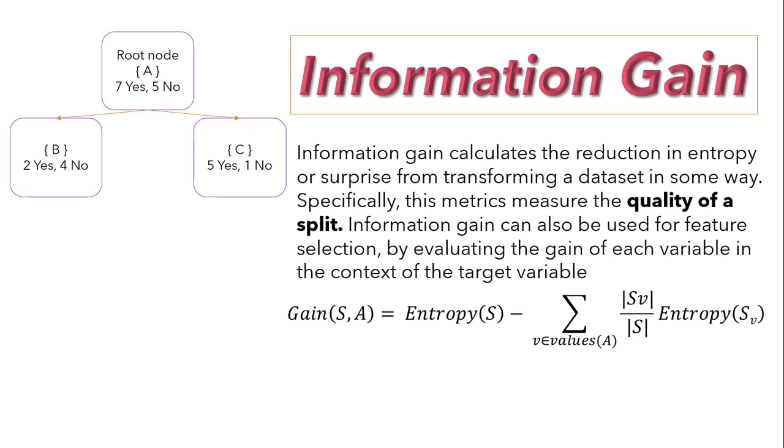I know this looks complicated, but we will understand this with one example. Again I will consider the same split we have used for understanding entropy. Here node A is splitting into node B and node C, where node A has 7 yes 5 no, node B has 2 yes 4 no, and node C has 5 yes 1 no. According to the formula, first we have to calculate entropy of S, which is nothing but the entropy of node A, that is root node. I will apply the same entropy function for this and I can get it as 0.97. Then we will compute entropy of node B and node C, which we have already calculated as 0.92 and 0.65.